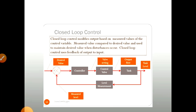Now check this closed loop control example. Closed loop control modifies output based on the measured value of the control variable. Here we measure the output and according to that output we modify the control action. The measured value is compared to the desired value and used to maintain the desired value when disturbances occur. This closed loop control uses feedback of output to input.